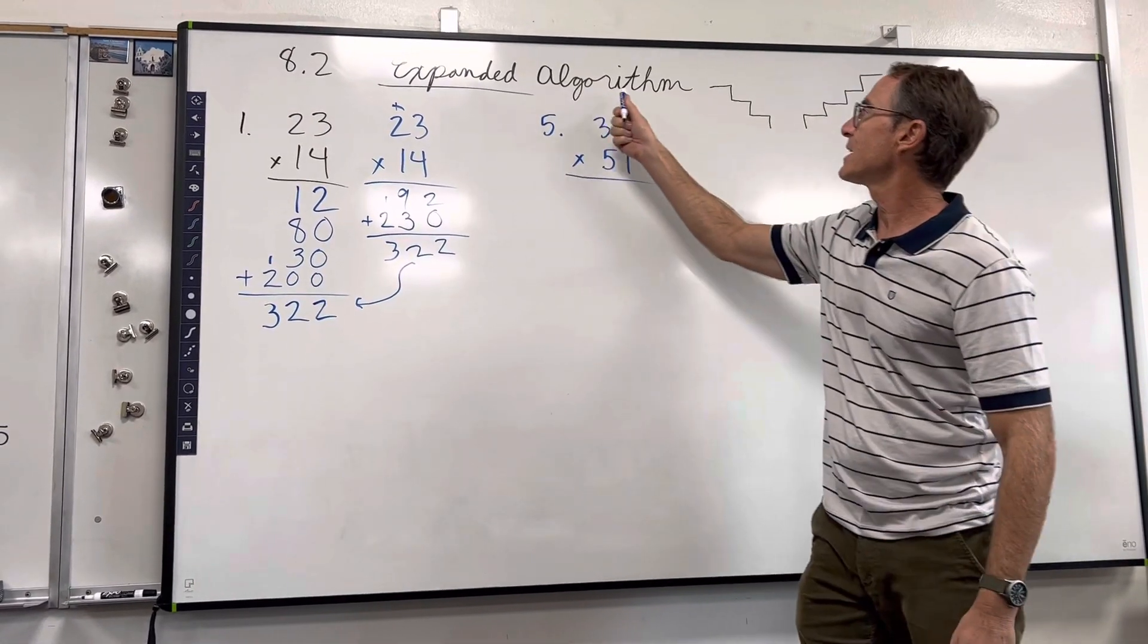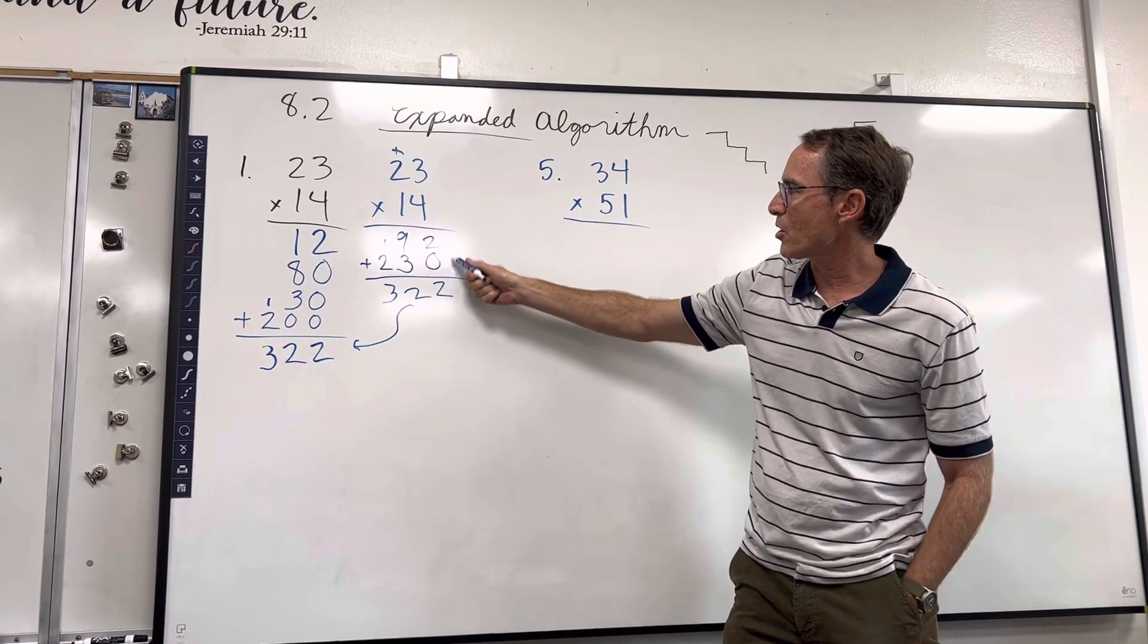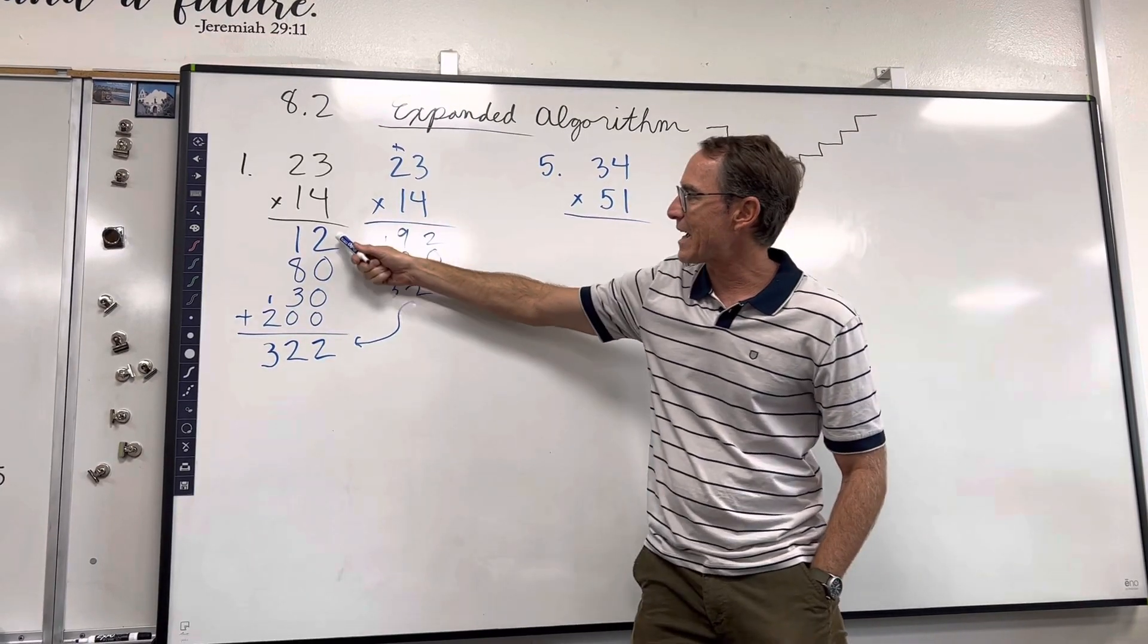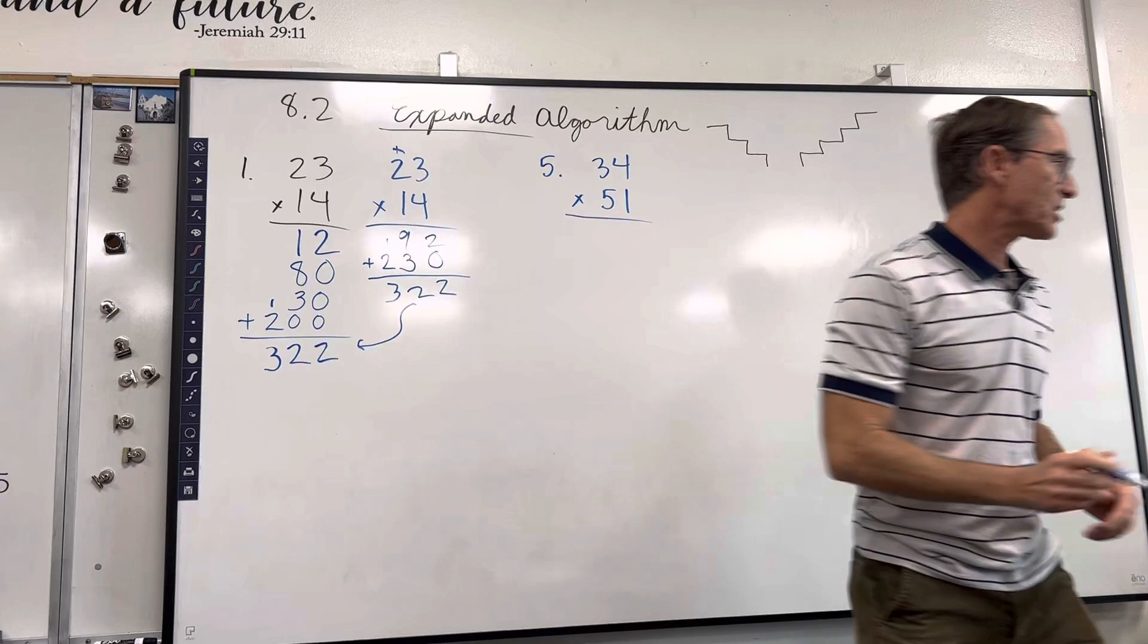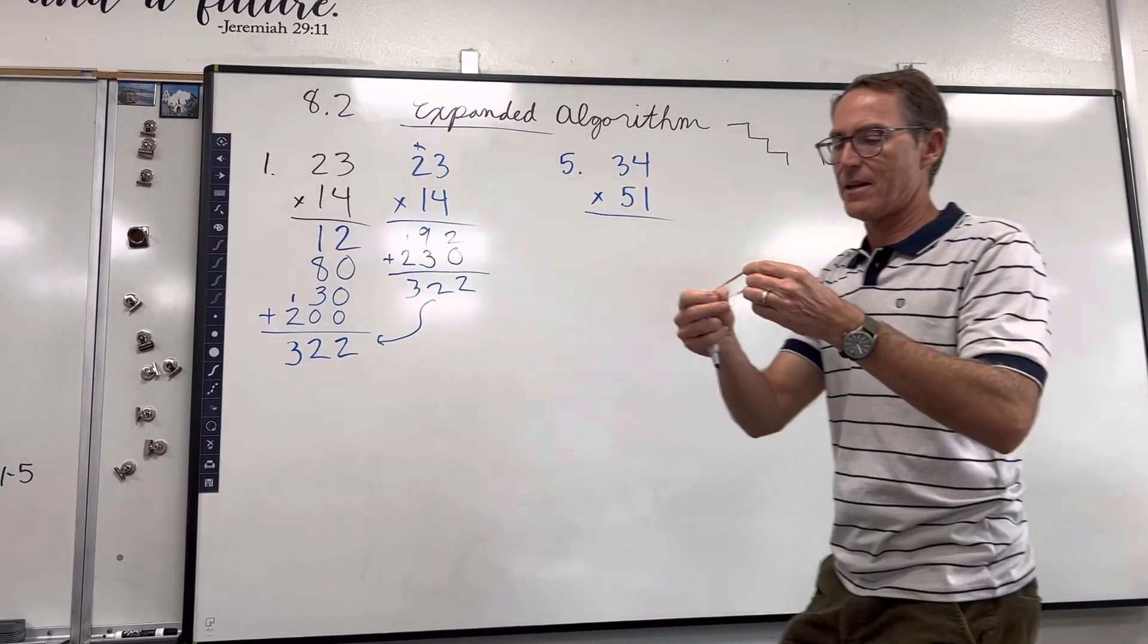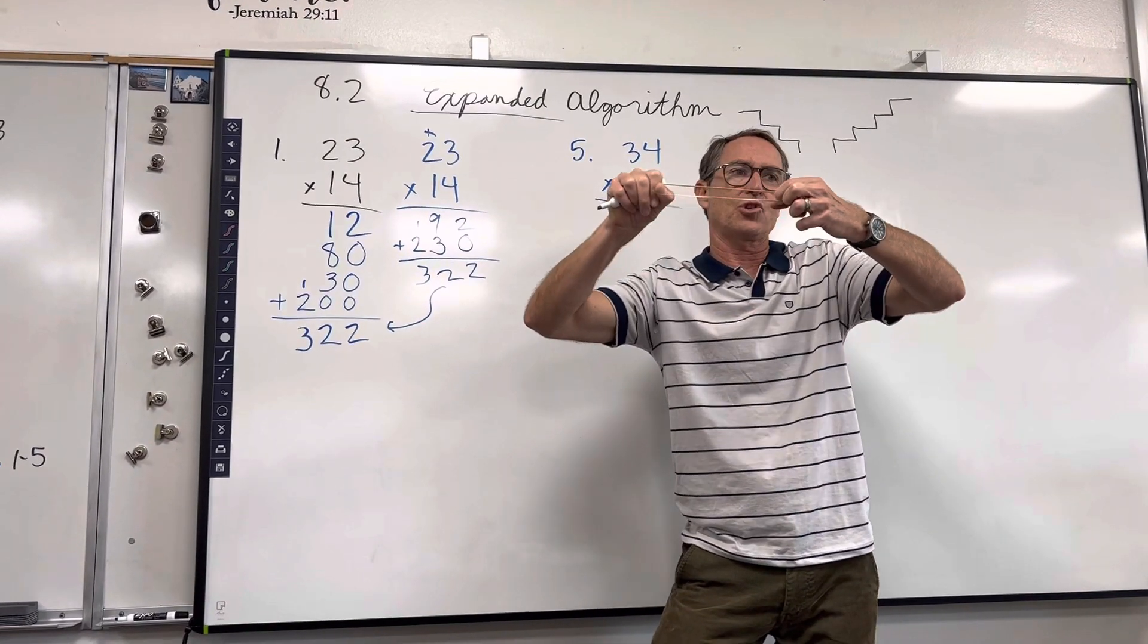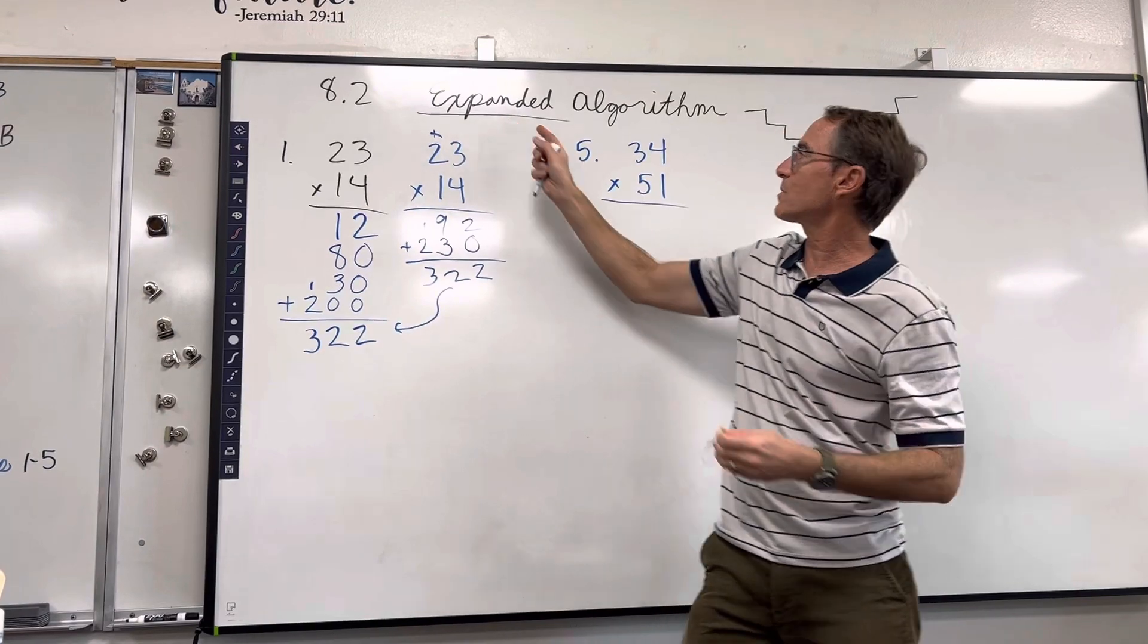There was just two partial products. Today's lesson has four partial products because it's expanding, kind of like a rubber band, right? If you expand it, you're making it longer. So today's lesson is expanded algorithms.